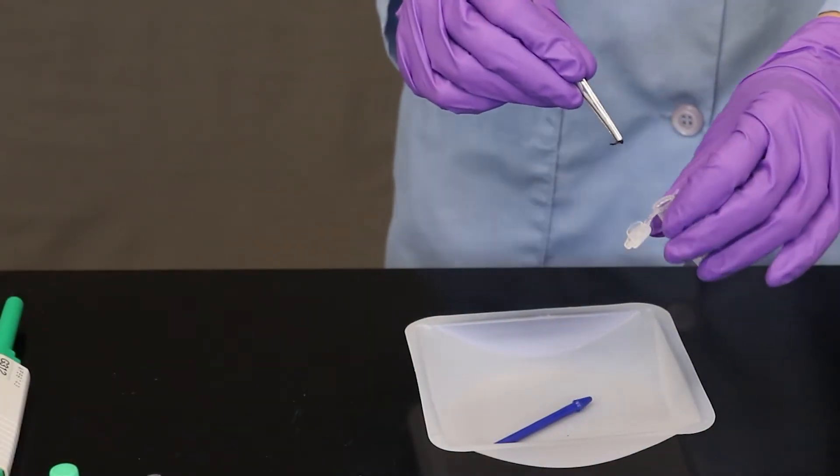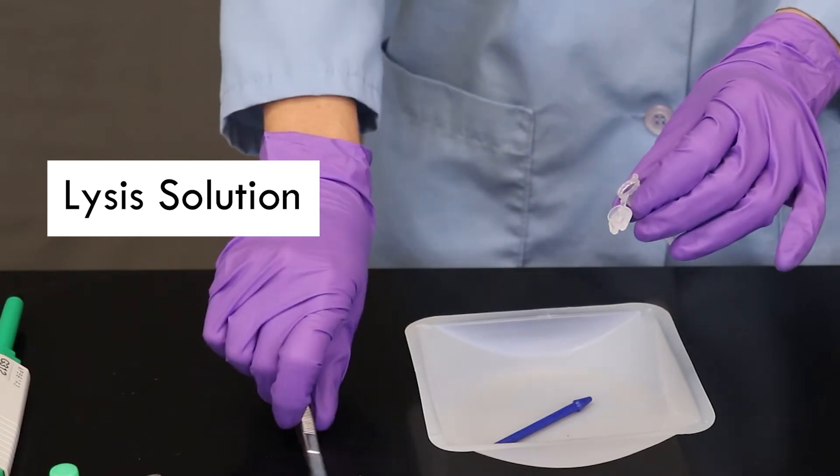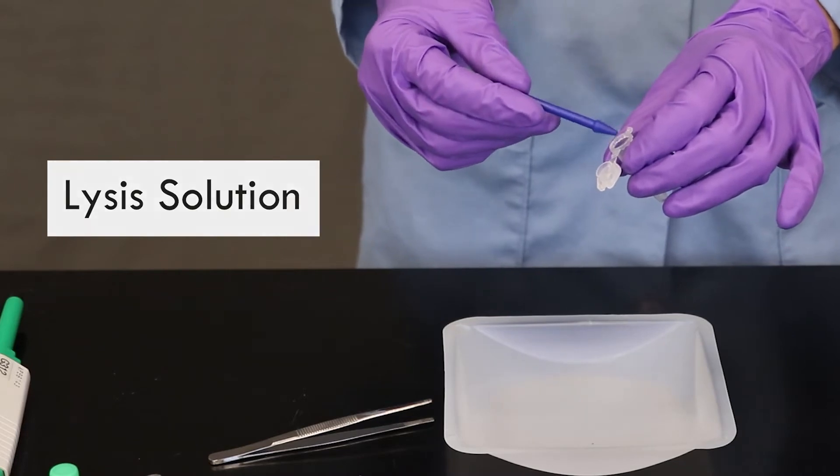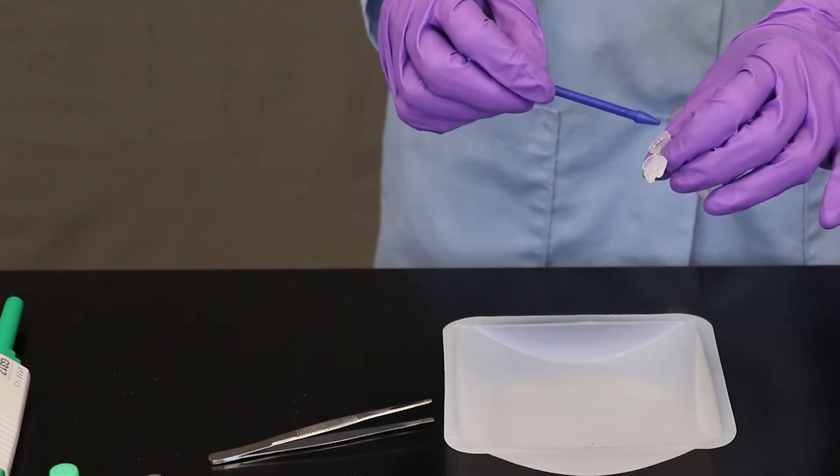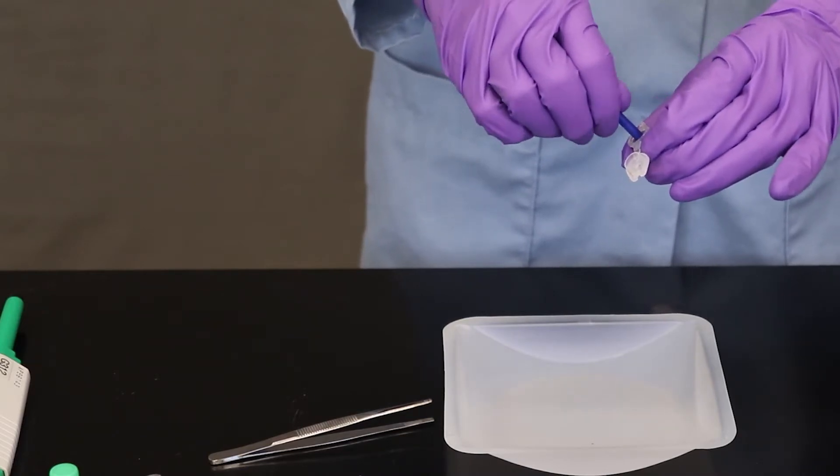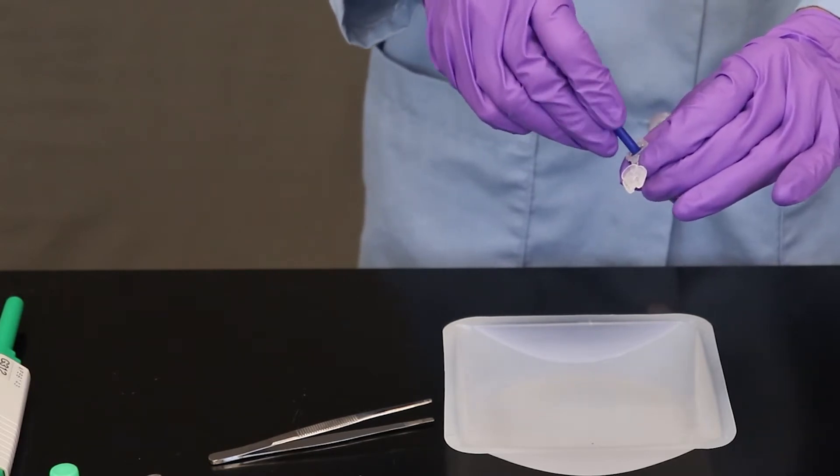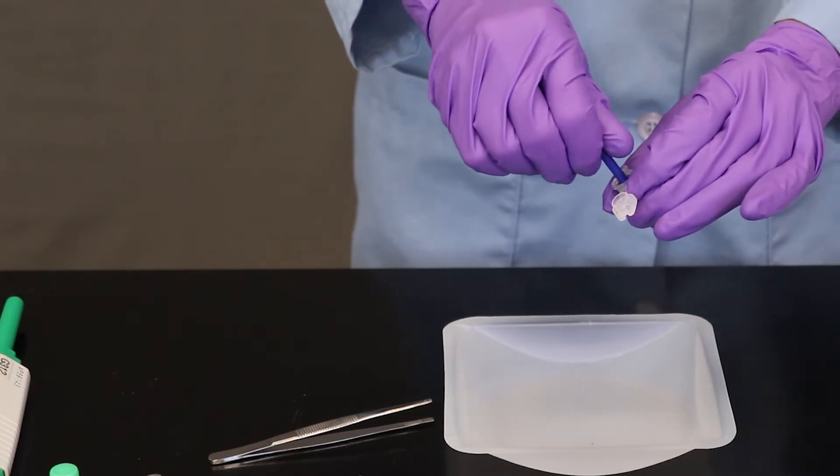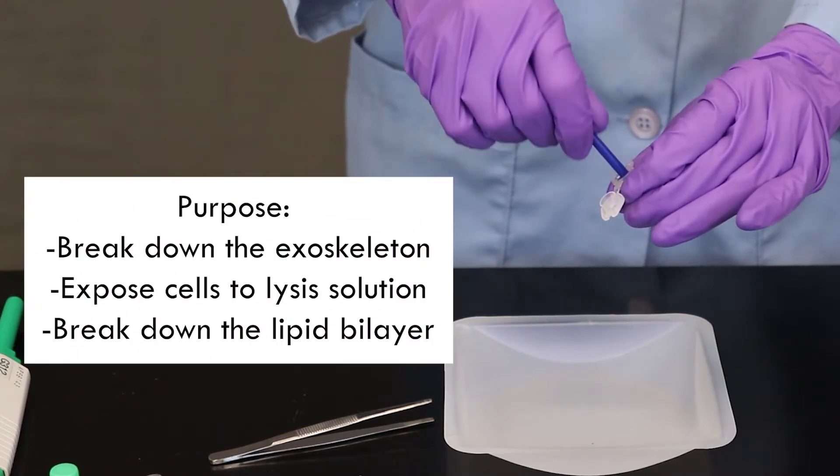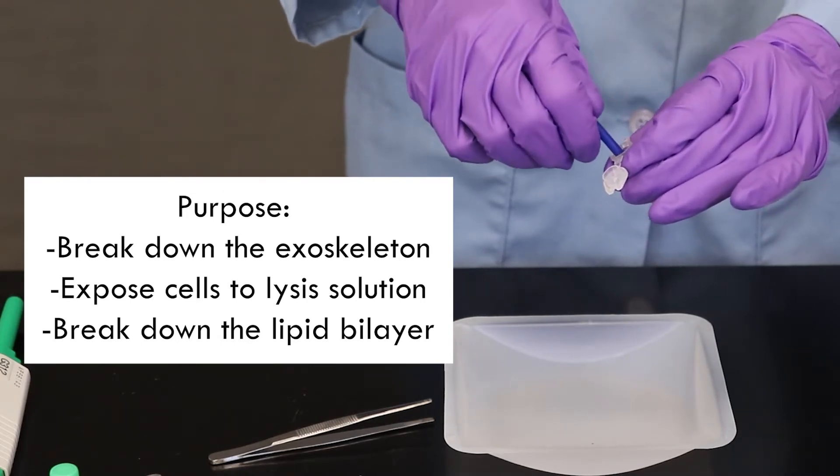So here I have an insect leg and I'm adding it to the lysis solution. I have 180 microliters of lysis solution in this microfuge tube. And I'm going to use this small pestle and mechanically break down the leg. So I'm going to grind the tissue a lot. I'm pushing the pestle against the bottom of the microfuge tube here and twisting.